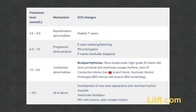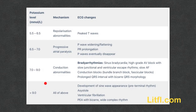Whenever you see bizarre QRS morphology, think of hyperkalemia. As a terminal rhythm, above a potassium of 9, we see development of sine waves, asystole, V-fib, and pulseless electrical activity with bizarre wide complex rhythm.